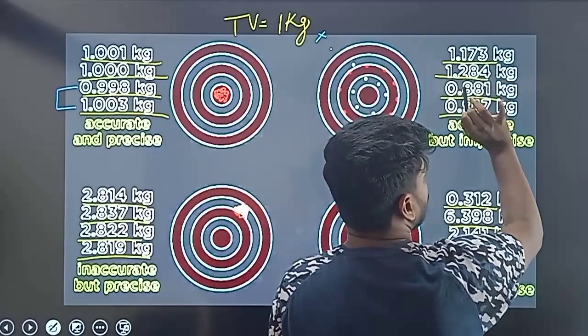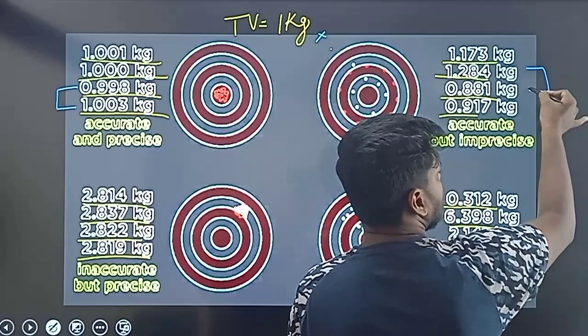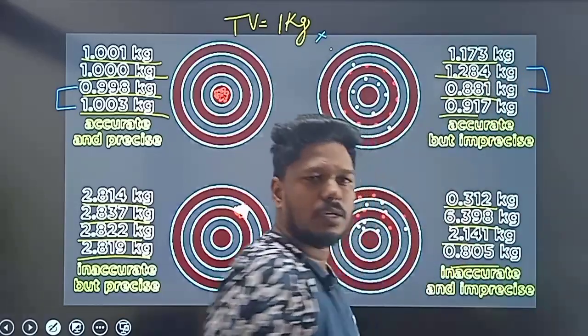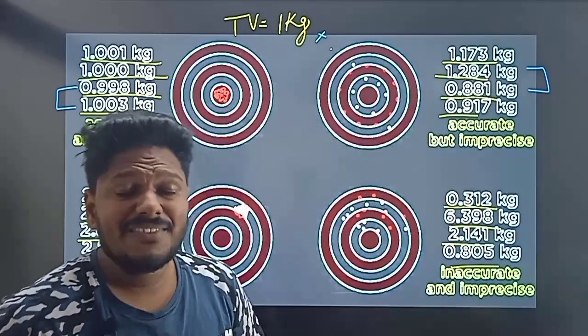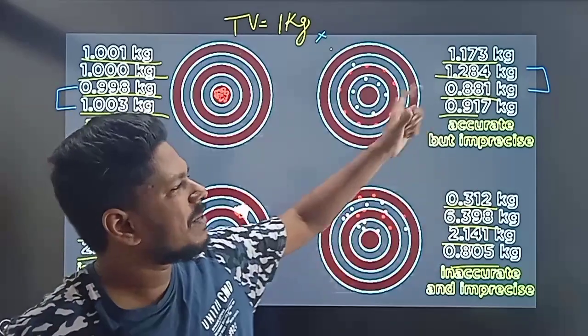Another example: 1.7, 1.2, 0.8, 0.8. When you see these values, you can say there's variation. You can say it's a little too spread out. That's why you say it's not precise.